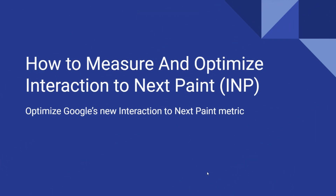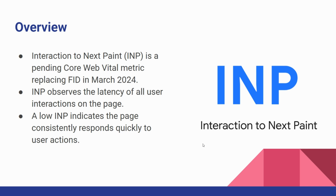Interaction to Next Paint is a web performance metric that measures a page's overall responsiveness to user interaction. It calculates the time between a user interaction and the next visual update on the page.